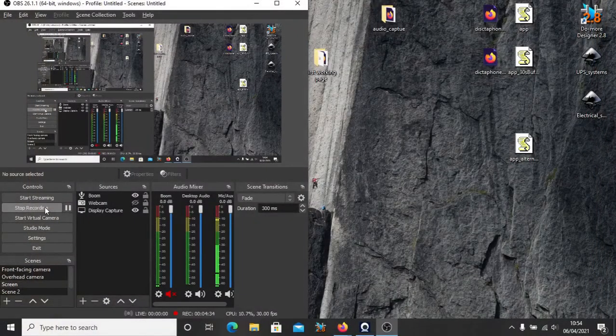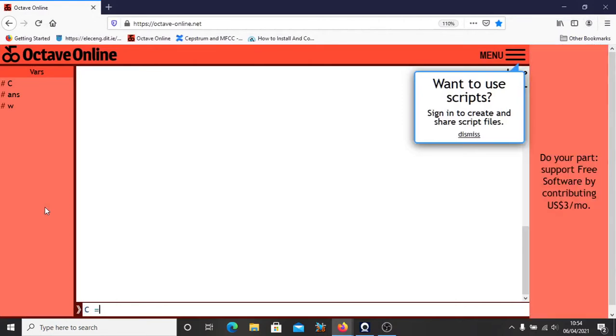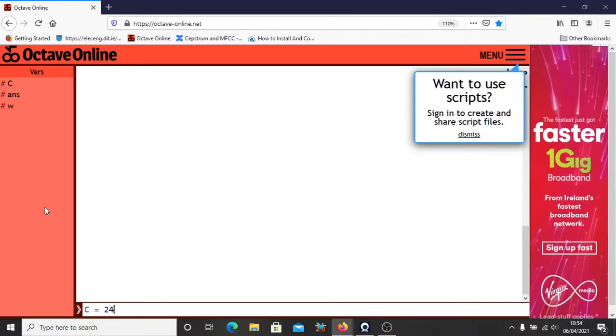I'm just going to swap onto the screen here. Pull up Octave just as a means of calculating stuff. So what we're told in the question that our capacitance is 24 microfarads. Our frequency is equal to 700 Hertz. So we can work out the capacitive reactance. That's 1 divided by 2 times pi times the frequency times the capacitance.